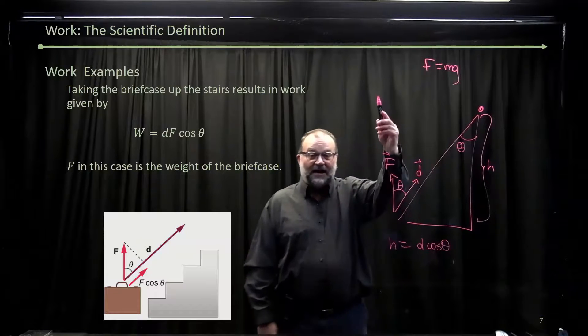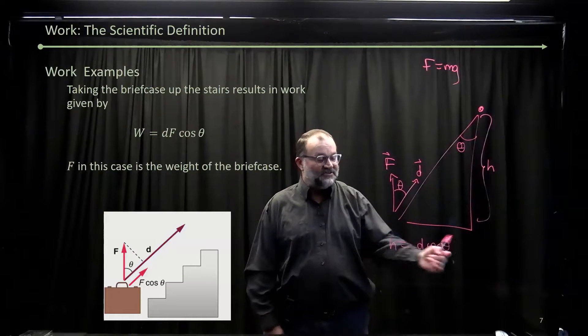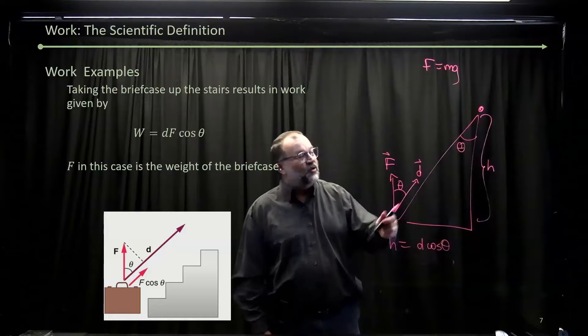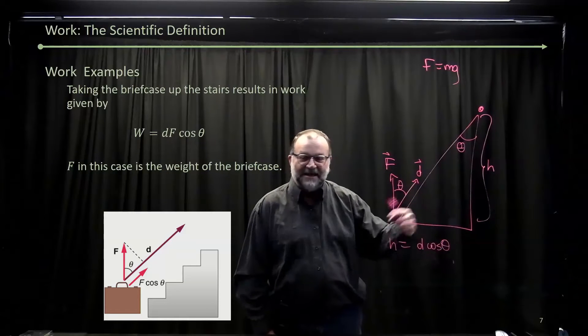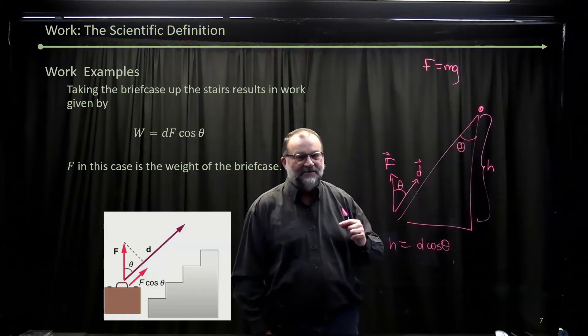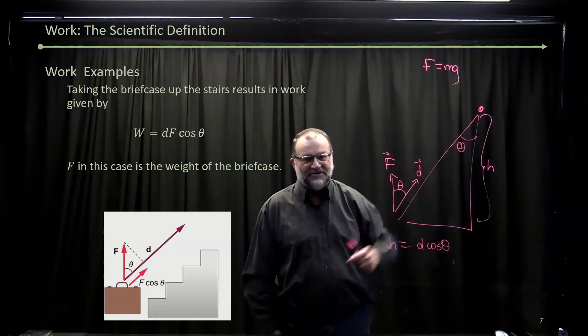So if you went straight up, you'd have F times D cosine theta. If you go up at an angle, you've got D times F cosine theta. You get to the same place in terms of the distance you go up the stairs.